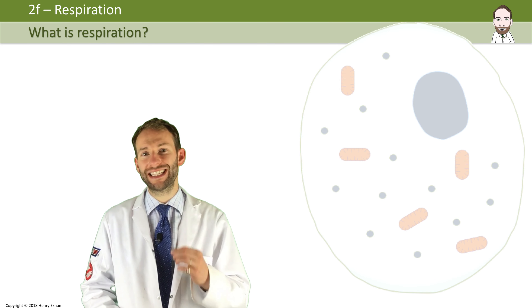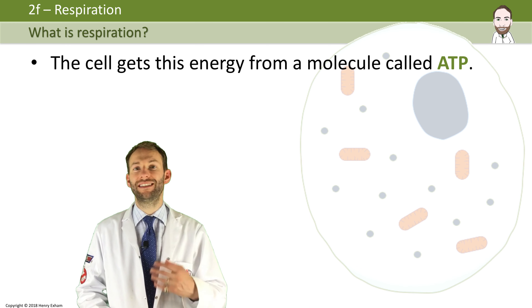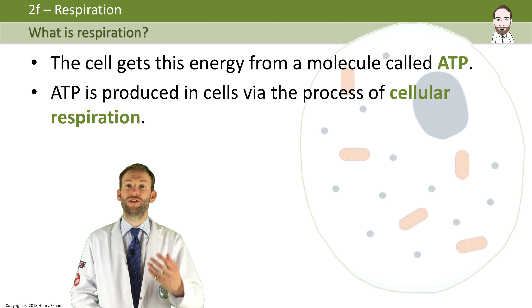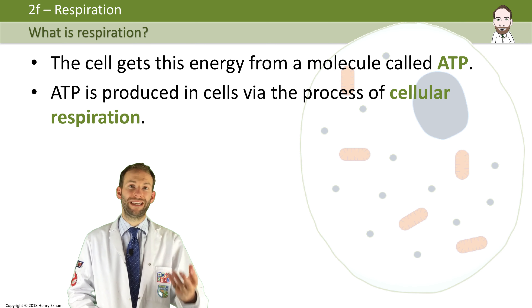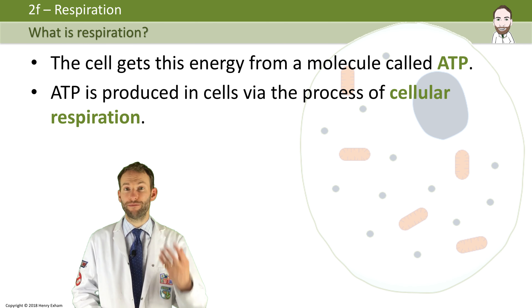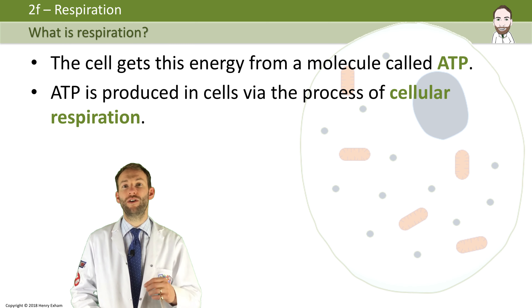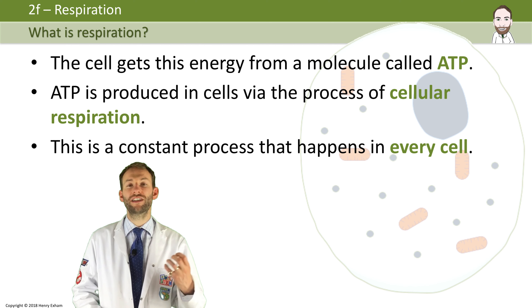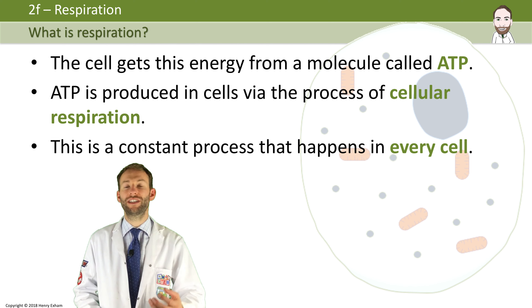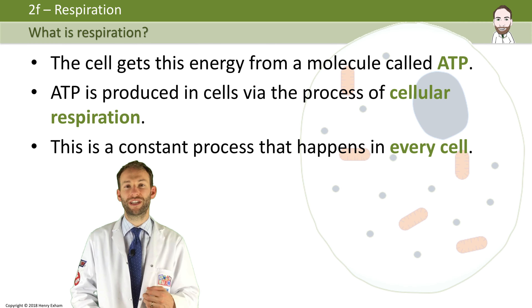The cell gets this energy from a molecule called ATP that is produced in cellular respiration. It's produced from the glucose that you eat if you're an animal, or that you make yourself through photosynthesis if you're a plant. Every cell carries out this vital process of respiration to release the stored energy inside that glucose and convert it into ATP that the cell can then use for all these different processes.